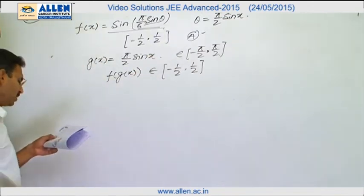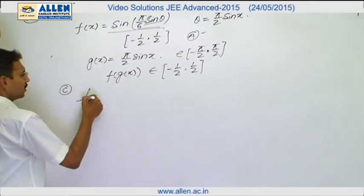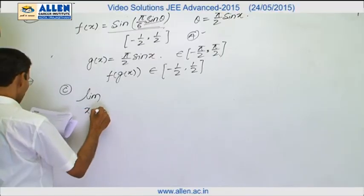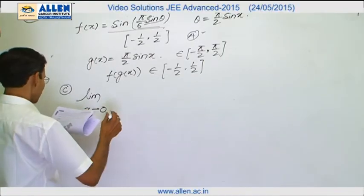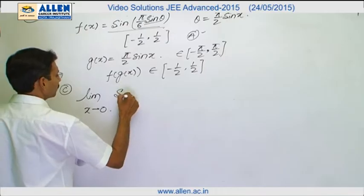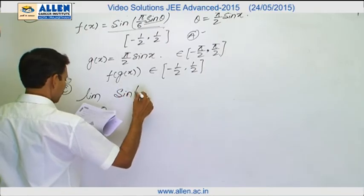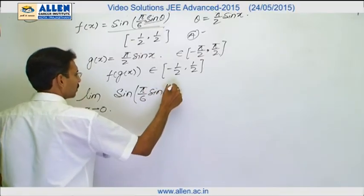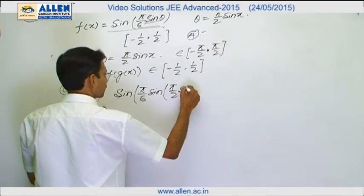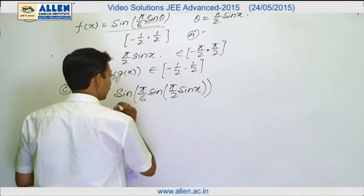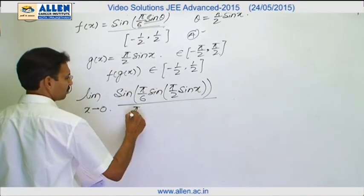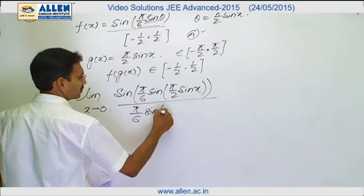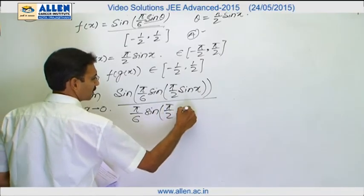In c option, it is a limit, limit x approaching to 0, f(x) upon g(x). f(x) is sine of pi by 6 sine pi by 2 sine x, f(x) divided by g(x). I will multiply this expression by its angle sine pi by 2 sine x.